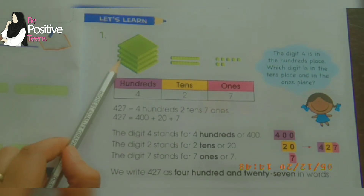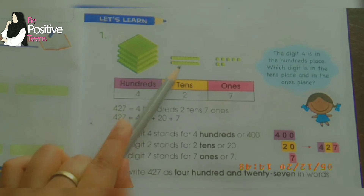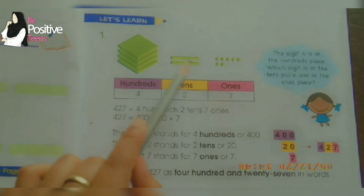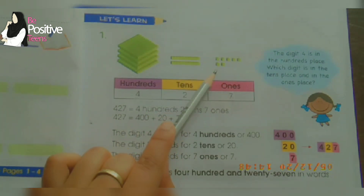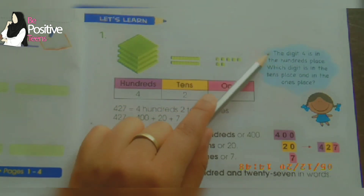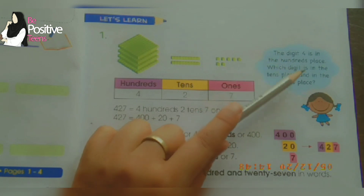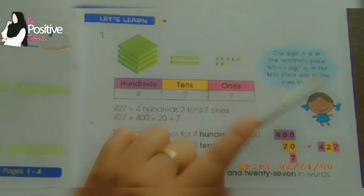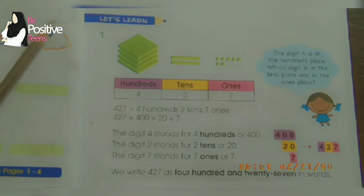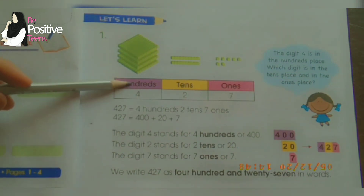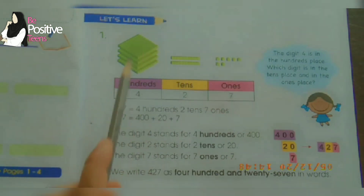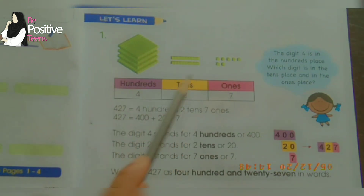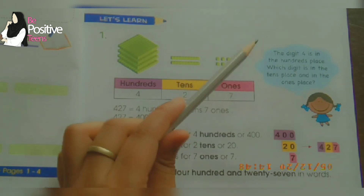Now let's learn number one. Over here you can see there are some bars — four bars of hundreds, two bars of tens, and seven ones. In this place value table there are three columns: hundreds, tens, and ones. The digit four is in the hundreds place. There are four hundreds, two tens, and seven ones.